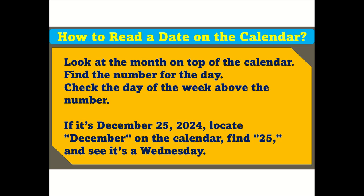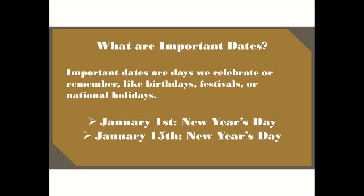How to read a date on the calendar: Look at the month on top of the calendar, find the number for the day, and check the day of the week above the number. For example, if it's December 25th, 2024, locate December on the calendar, find 25, and see that it's a Wednesday.